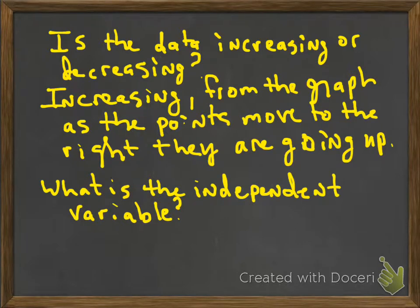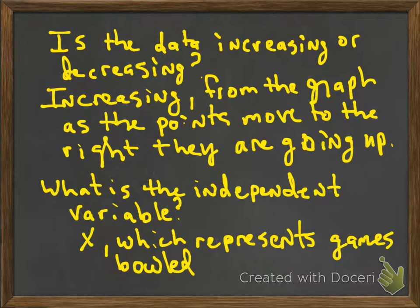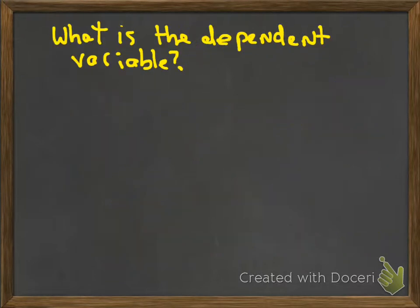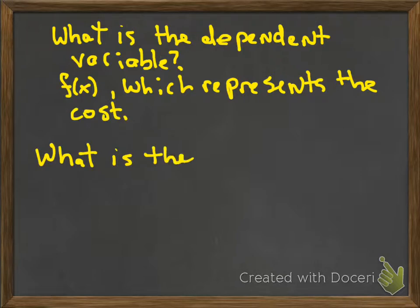All right. What's the independent variable? Well, the independent variable is always X. And in this case, that represented the numbers of games played, or which represents games played, or games bowled. What is the dependent variable? The dependent variable, in this case, is F of X. And because I'm basing this off the function rule. And what does that represent? That represents the cost for bowling. So depending on the number of games you play, this represents the cost, how much you would have to pay.